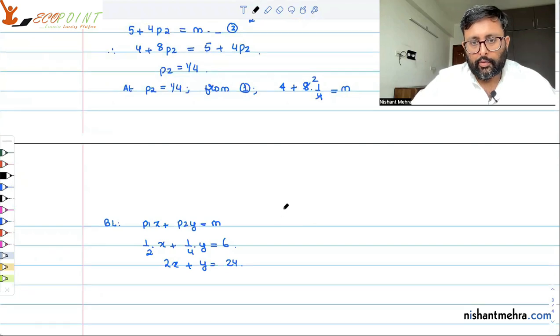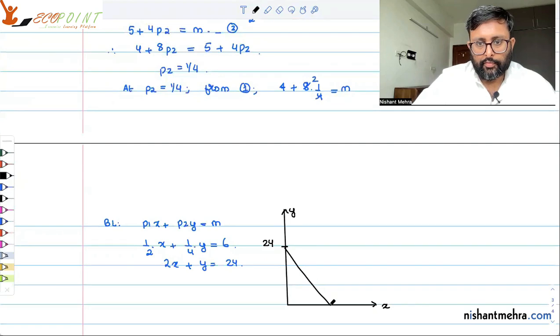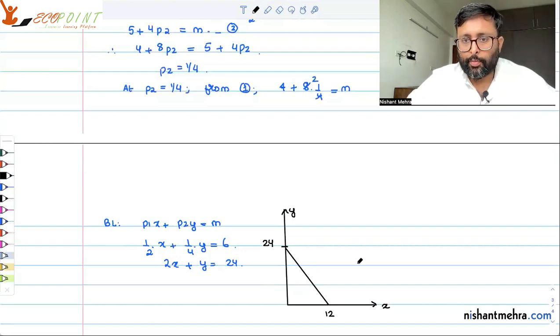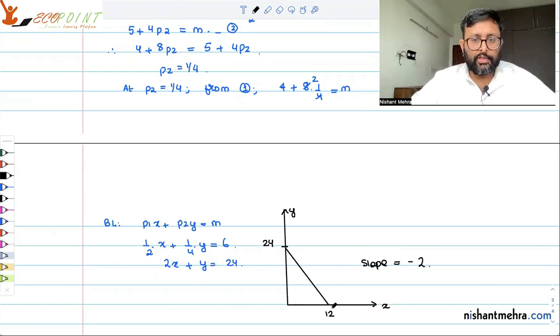Once you just draw the budget line for this, when X is 0, Y is 24. When Y is 0, X is 12. So this is the budget line which has a slope of minus the intercept on Y axis upon intercept on X axis. This will come out to be minus 2. We will generally take the absolute value of the slope, which is equal to 2. So this is what I wanted to do in this class. We're done, thank you.